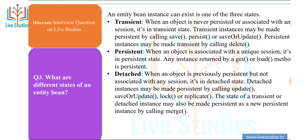Persistent: when an object is associated with a unique session, it is in a persistent state. Any instance returned by a get() or load() method is persistent. Detached: when an object was previously persistent but is not associated with any session, it is in a detached state.